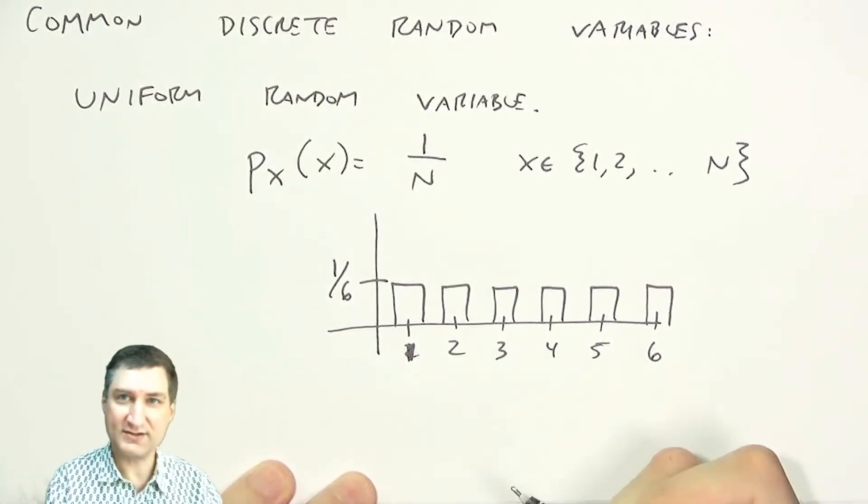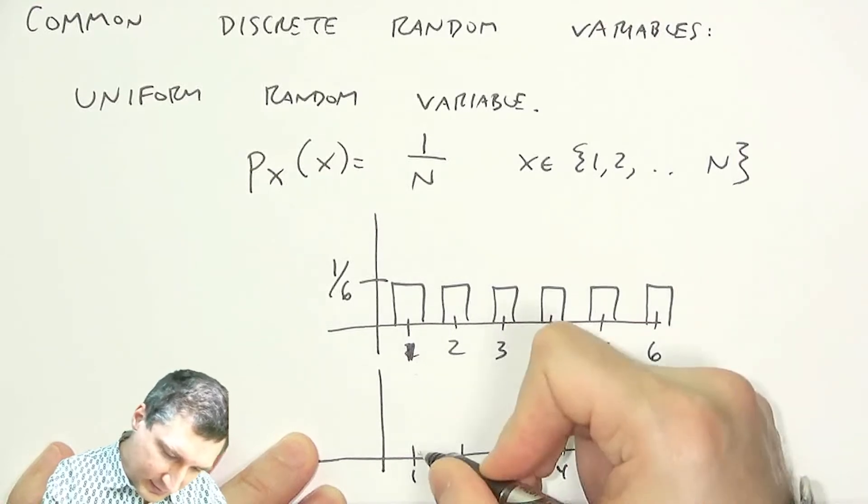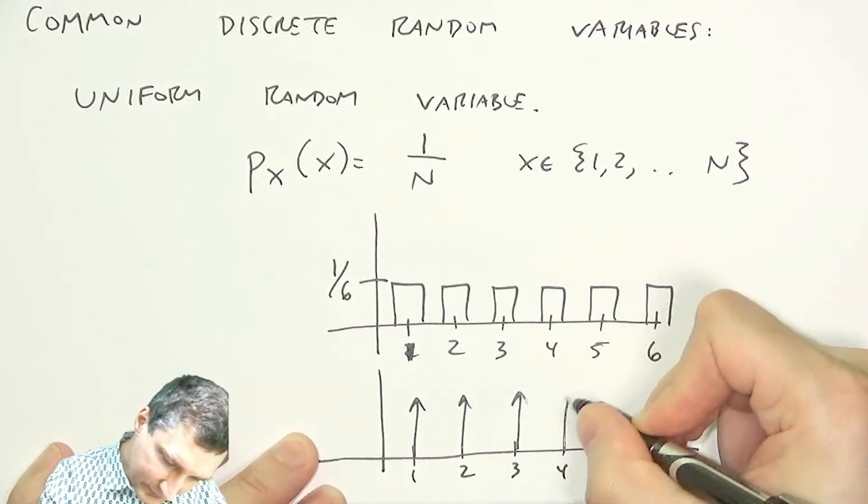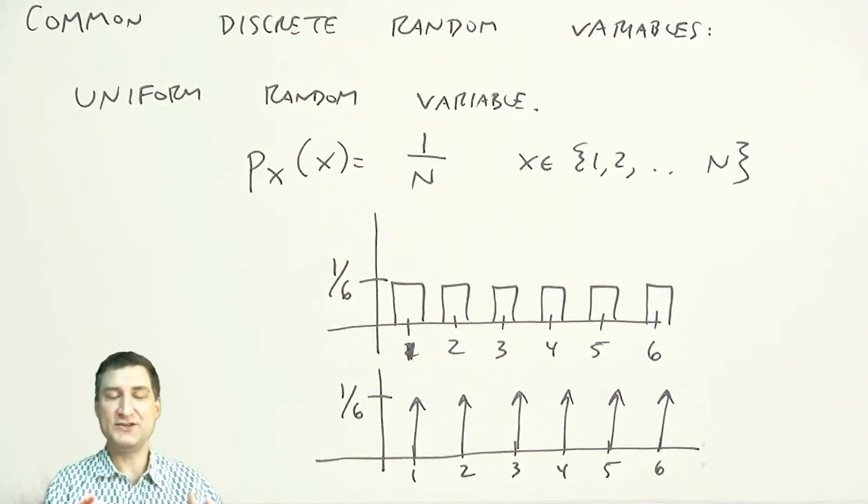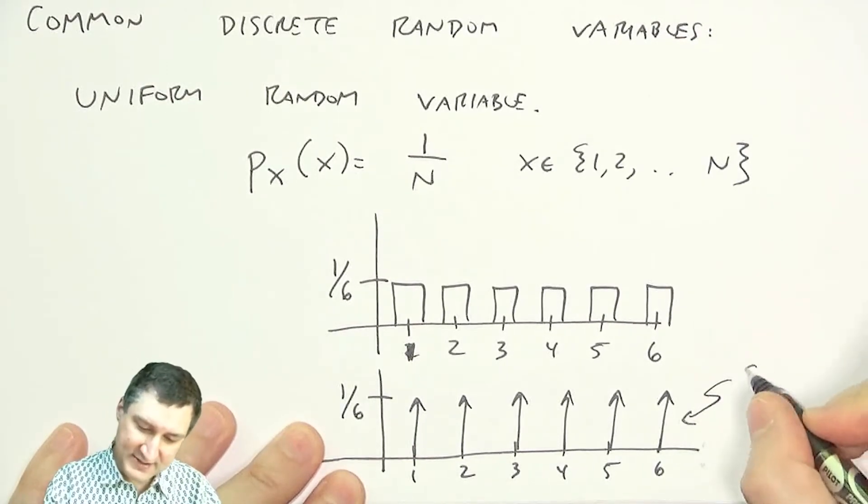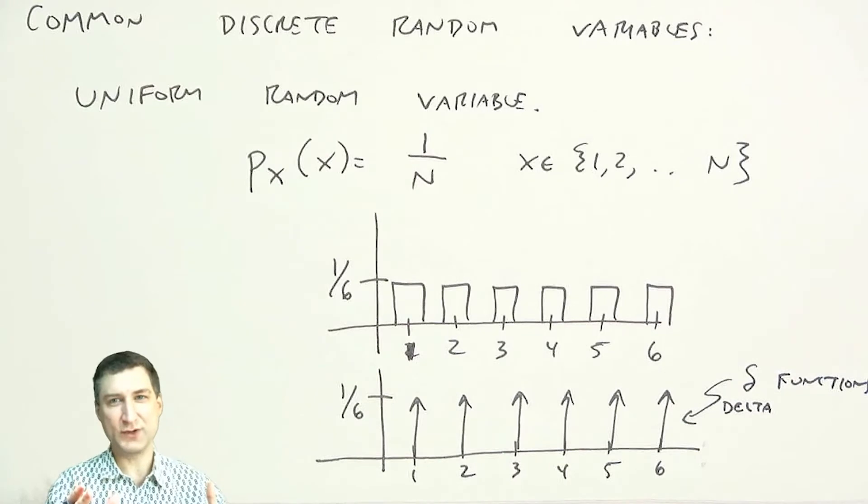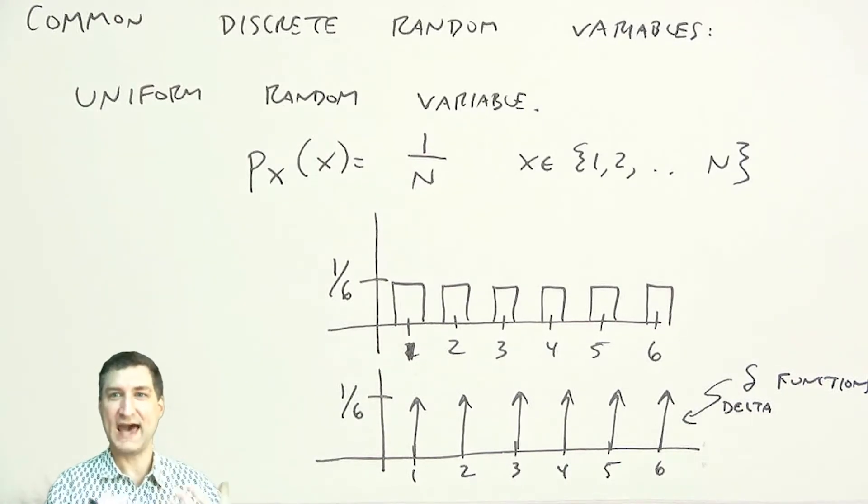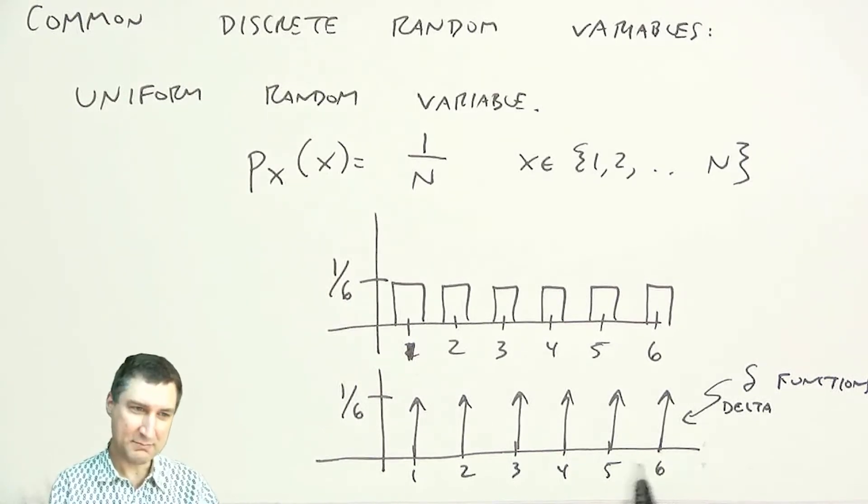Now, one thing that you'll often see me do in these lectures, and there's a reason for it, is to draw this not as a bar graph, but as a set of arrows like this. And these arrows have height 1/6. Now, there's a reason for this, and the reason is related to if you took a class on signals and systems, if you're like an electrical engineer, you probably took a signals class. And these here are technically delta functions. So, there's a reason why I want to do it this way, and it's going to have to do with when we start to compute things like averages and probabilities of intervals and so on, we're going to start to do integrals.